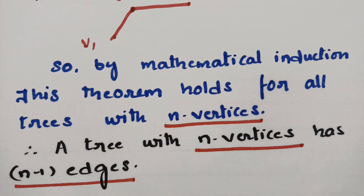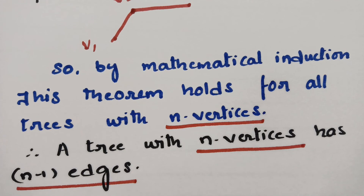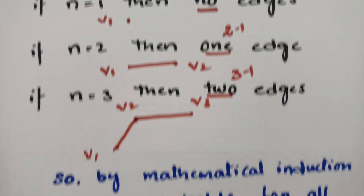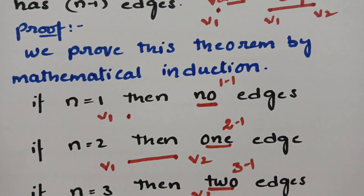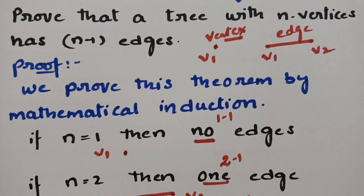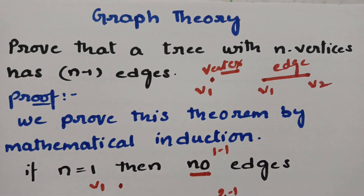According to mathematical induction, the theorem is proved: a tree with n vertices has n minus 1 edges. This is the proof which you have to write in the examination if it is asked. This is the most important and repeatedly asked question from graph theory.